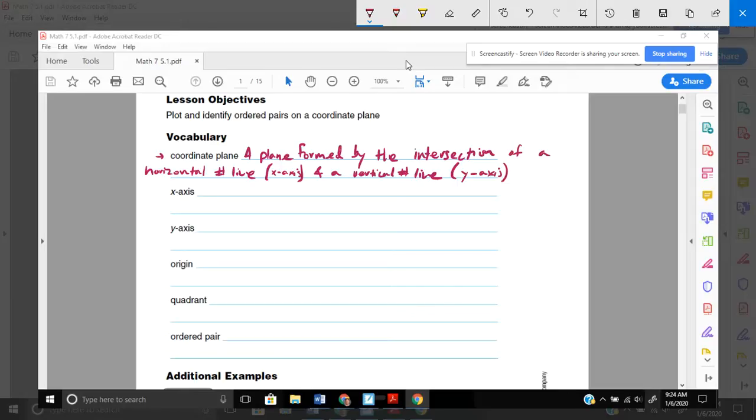Okay. So horizontal is this way. Think about the sun coming over the horizon. This is the x-axis. It goes, think about a number line, kind of like the one you see up front of the room where numbers to the right are positive and numbers to the left are negative. So negative one, negative two, negative three.